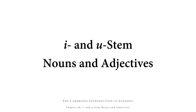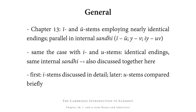Welcome to the video for Chapter 26 of the Cambridge Introduction to Sanskrit, which is going to tell you about I and U stem nouns and adjectives. In Chapter 13, we looked at long I and long U stems, and those employed nearly identical endings and were completely parallel in their internal sandi. The same is actually the case with short I and short U stems — they have identical endings and their internal sandi is the same or completely parallel.